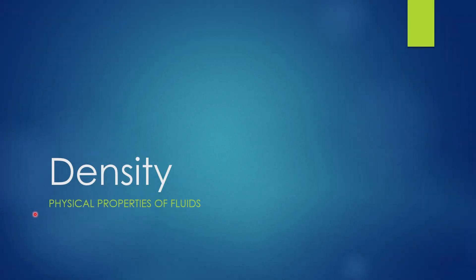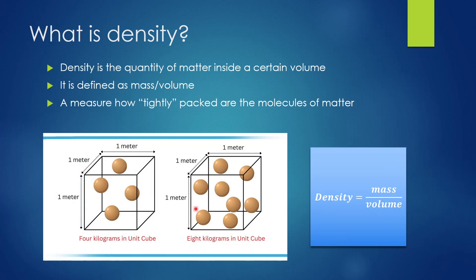Welcome to the density section on physical properties of fluids. First off, we are going to define density. What is density? The easiest way to think of density is as a quantity of something, a quantity of matter inside a certain volume. The way we define density is mass divided by volume, so the mass of the particles inside a certain volume.